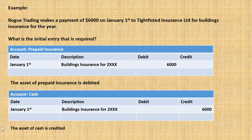Here's an example: Road Trading makes a payment of six thousand dollars on January the first to Tight Fisted Insurance for the building's insurance for the year. The initial entry on January the first is to debit an asset account called prepaid insurance with six thousand dollars, and of course we credit the cash account with six thousand dollars because we paid out that amount for the insurance.